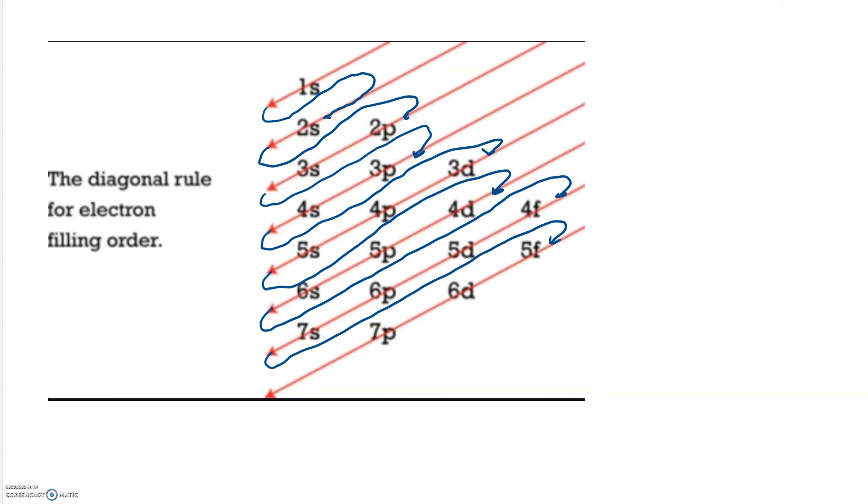And this will explain a lot of why the periodic table looks the way it does. So for example, in the one that we just did, potassium, its filling order or electron configuration is 1s2, 2s2, 2p6, 3s2, 3p6, 4s1. And you'll find that if you follow these diagonal arrows, 1s followed by 2s, which is followed by 2p, which is followed by 3s, which is followed by 3p, and then 4s. And then the next orbital that will fill after 4s will be 3d.